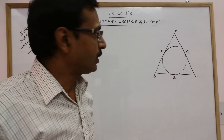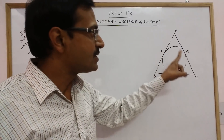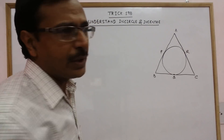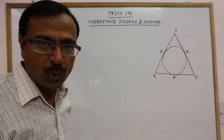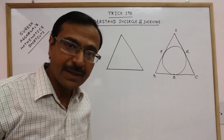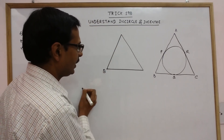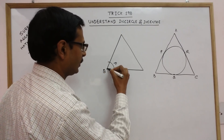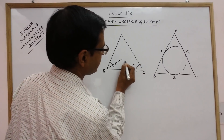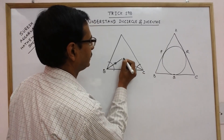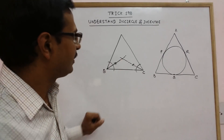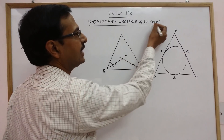Now, what is the incenter and how can we draw this circle when a given triangle with given measurements has been provided? To understand this, we should know that in a triangle, whenever we draw the angle bisectors — say this is angle B, and if you draw the angle bisector of this angle, this is the angle bisector of angle B. Similarly, when you draw the angle bisector of angle C, the point where the two angle bisectors meet each other is called the incenter of the triangle.